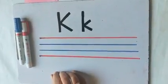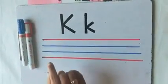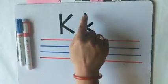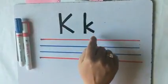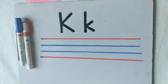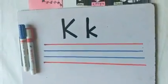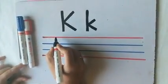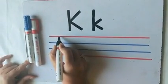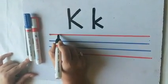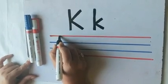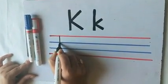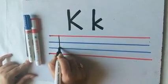Now we will learn how to write both capital letter K and small letter K. For capital letter K, first we will make a standing line from the first red line to the second blue line.